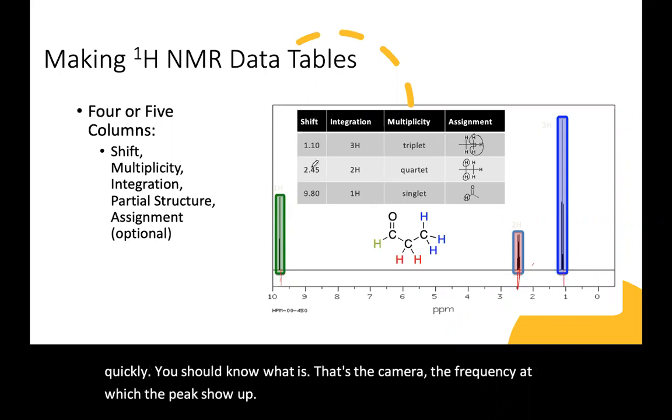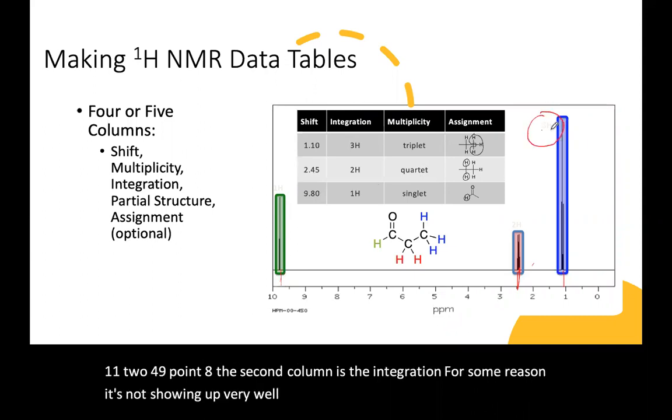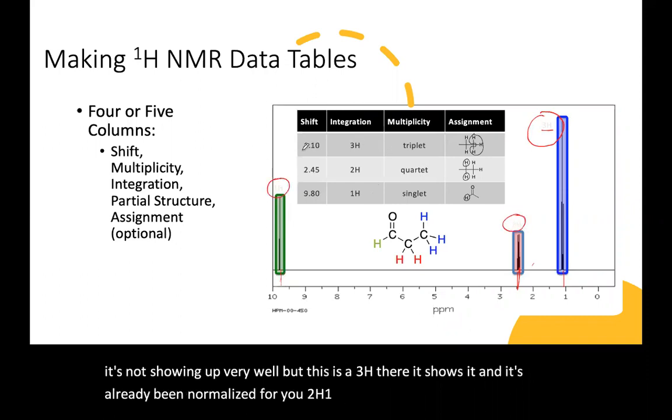So those are recorded into the first column, 1.1, 2.4, 9.8. The second column is the integration. For some reason, it's not showing up very well, but this is a 3H there. It shows it, and it's already been normalized for you. 2H, 1H, and so then that's put into the column.